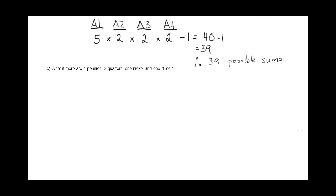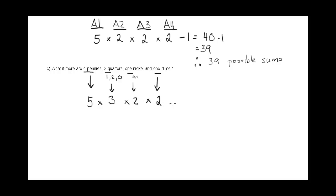For part C, she has four pennies, two quarters, one nickel, and one dime. Action one — four pennies — is five options (one, two, three, four, or none). Two quarters gives three options (zero, one, or two quarters), so multiply by three. One nickel: multiply by two. One dime: multiply by two. Then subtract one for the null set. So 5×3×2×2 = 60, minus one equals 59 possible sums of money.